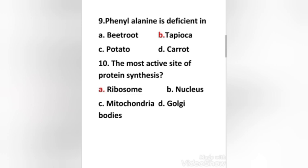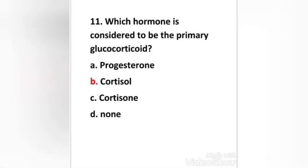Next question: The most active site of protein synthesis: ribosome, nucleus, mitochondria, Golgi bodies. Right answer is option A: ribosome. Which hormone is considered to be the primary glucocorticoid? Progesterone, cortisol, cortisone, none. Right answer is option B: cortisol.